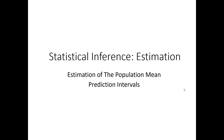And away we go to estimation of the population mean, which is a fancy word to say confidence intervals — our next step. Now we're doing the actual estimation stuff. We started off with the central limit theorem, which we built upon the normal distribution, and that sets our foundation for our confidence interval calculations, and then next our hypothesis testing.